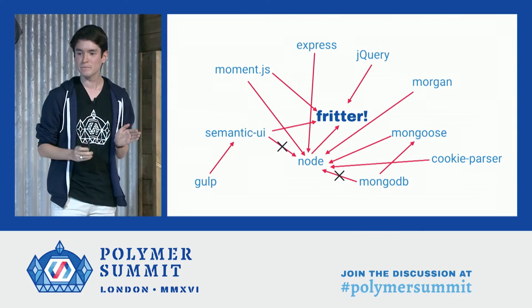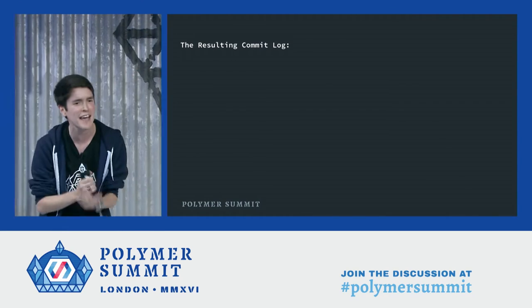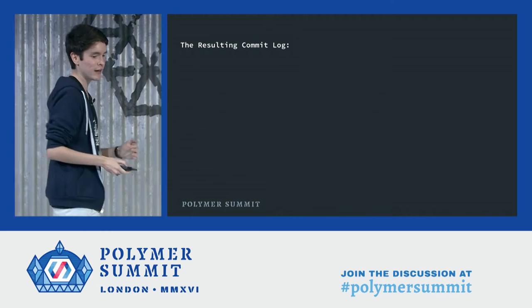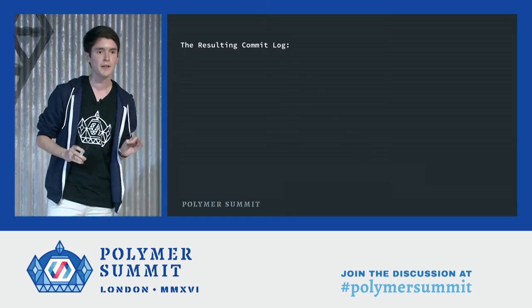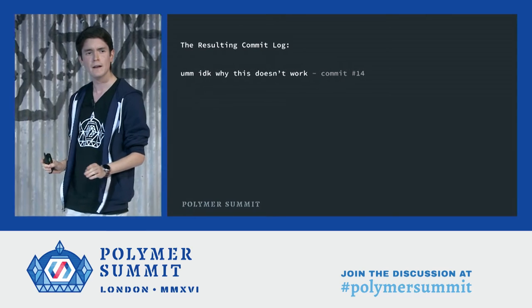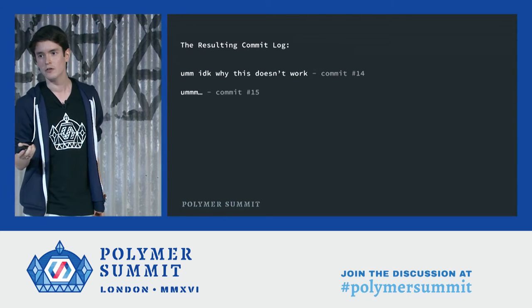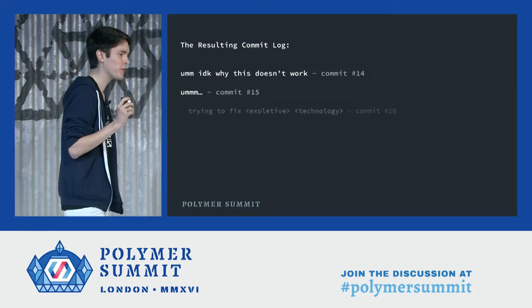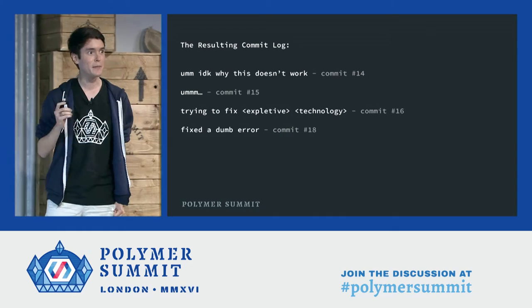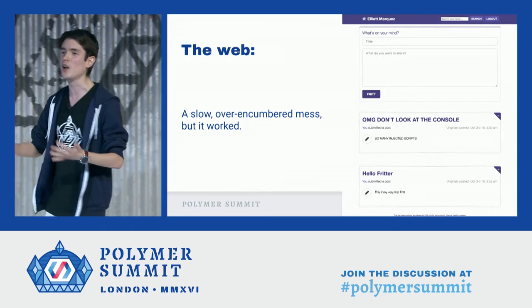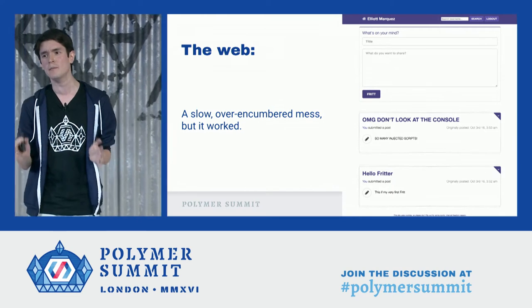But this was Fritter. When you use all of these technologies together with zero plan, you always end up in the exact same place. These are real commit messages, by the way. I call them the four stages of irresponsible hacking: stage one, confusion; stage two, even more confusion; stage three, anger; and stage four, I need a break. But before Polymer and Web Components, this was hacking with the web — a slow, over-encumbered mess. But it worked.